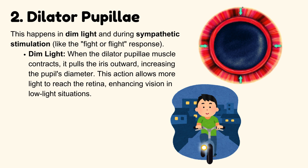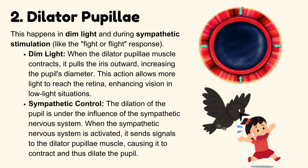In dim light, when the dilator pupillae muscle contracts, it pulls the iris outward, increasing the pupil's diameter. This action allows more light to reach the retina, enhancing vision in low-light situations. Sympathetic control: the dilation of the pupil is under the influence of the sympathetic nervous system. When the sympathetic nervous system is activated, it sends signals to the dilator pupillae muscle, causing it to contract and thus dilate the pupil.